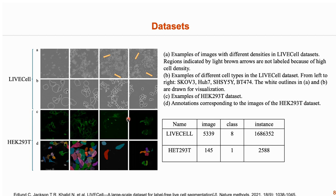We validate our approach on the LiveCell dataset and the HEK293T dataset. The LiveCell dataset is a large-scale public dataset imaged by phase-contrast microscopy, characterized by high-density cases and multiple cell types. HEK293T is a small-scale in-house dataset imaged by confocal microscopy, characterized by uneven cell brightness and the presence of some weak signals.